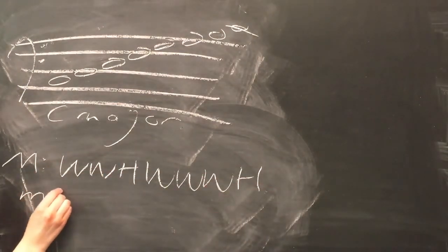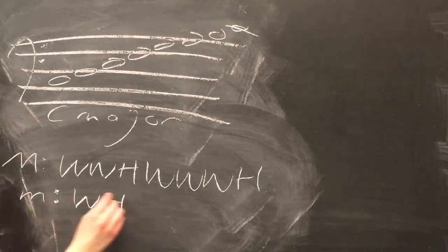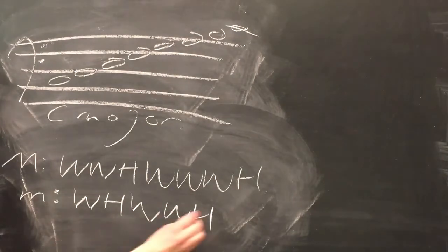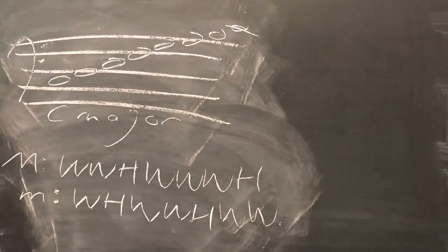The series of intervals comprising the natural minor scale is as follows: Whole-step, half-step, whole-step, whole-step, half-step, whole-step, whole-step. These interval orderings are what give major and minor scales their distinctive sounds.